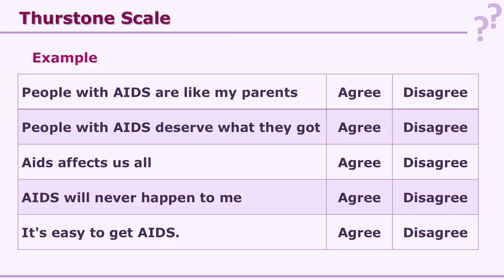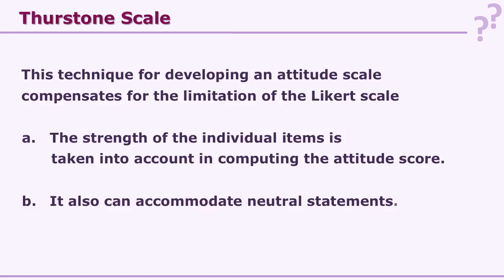Example statements for the Thurston AIDS attitude scale: 'People with AIDS are like my parents.' Agree/Disagree. 'People with AIDS deserve what they got.' Agree/Disagree. 'AIDS affects us all.' 'AIDS will never happen to me.' 'It is easy to get AIDS.' The rater has to say agree or disagree. The strength of an individual item is taken into account in computing the attitude score. It also can accommodate neutral statements — not every item is positive or negative; there can be a neutral statement as well.